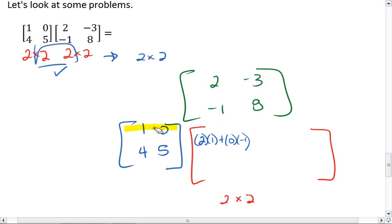Now you do the same thing with the first row and the second column. We take 1 times negative 3, plus 0 times 8. Those are the first two elements of our new matrix.